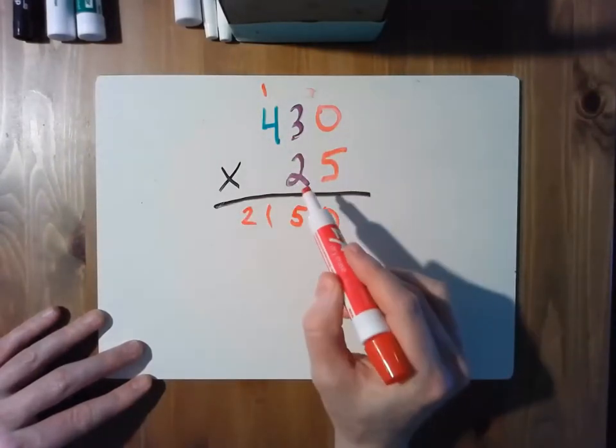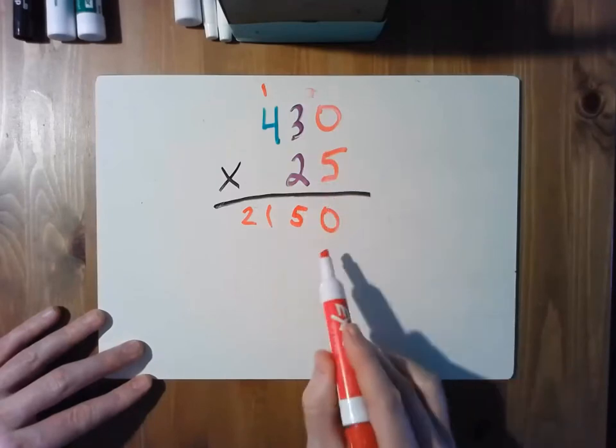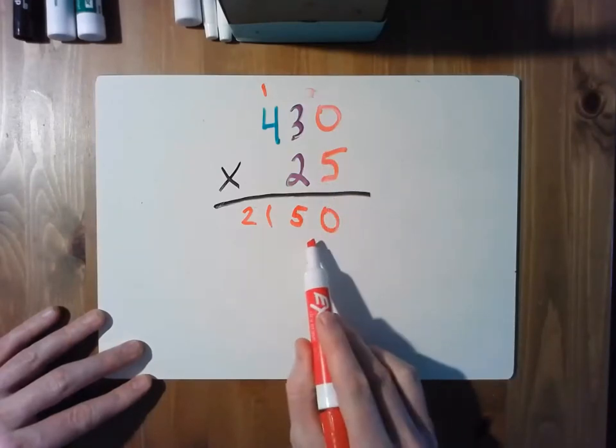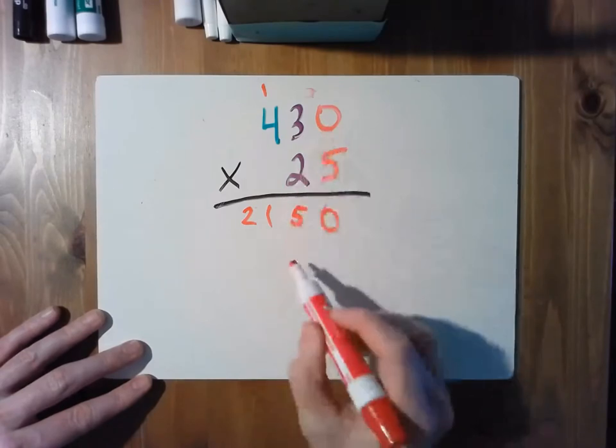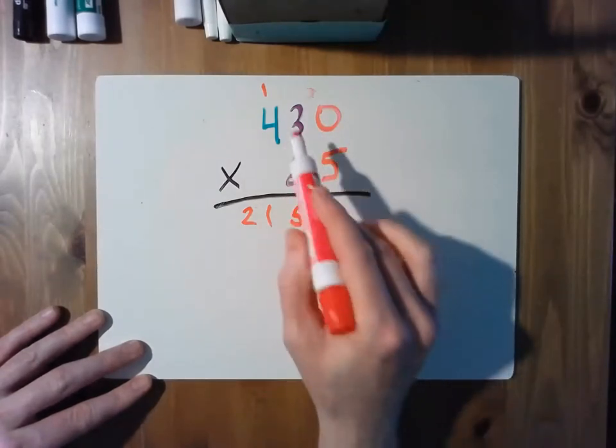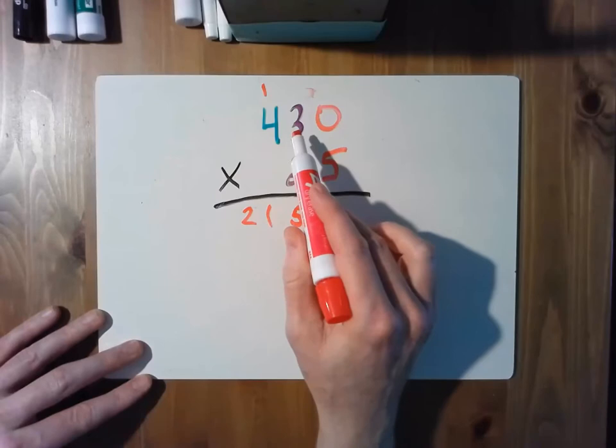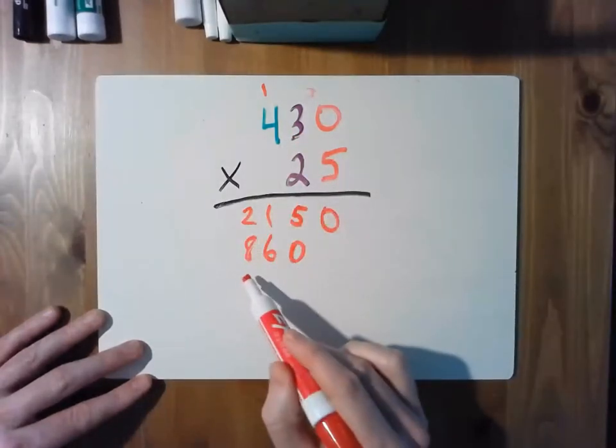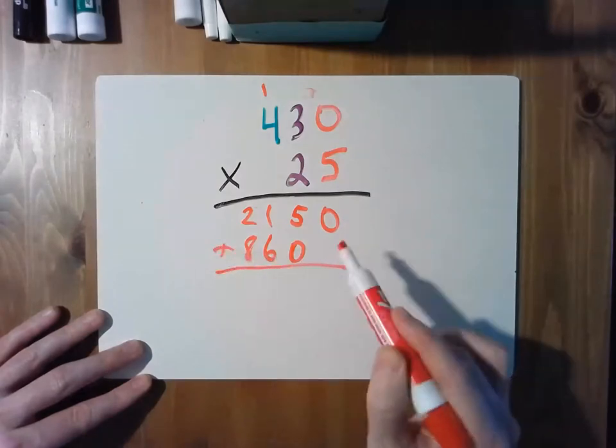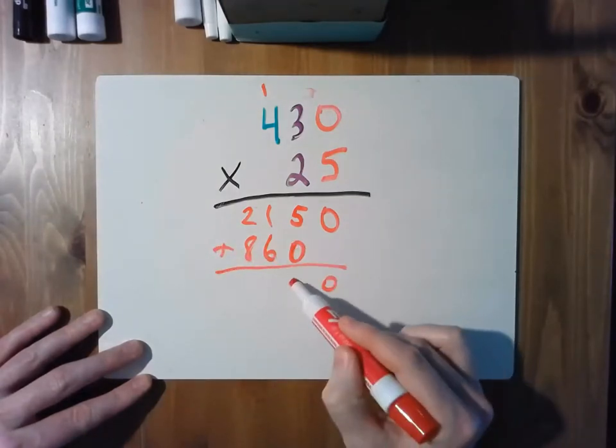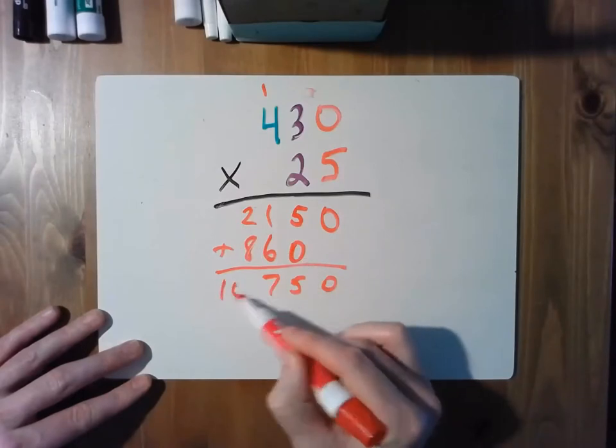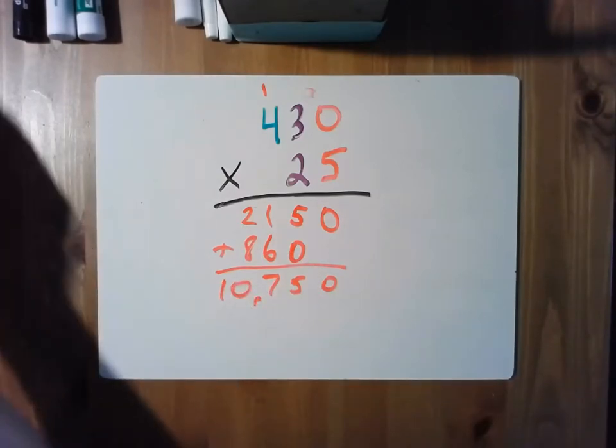Then you multiply times the 2 in the tens column. You're going to shift over under the 2150 partial product. 2 times 0 is 0 again. 2 times 3 is 6, and 2 times 4 is 8. Add these values together: 0, 5, 7, 8 plus 2 is 10. So you would get 10,750.